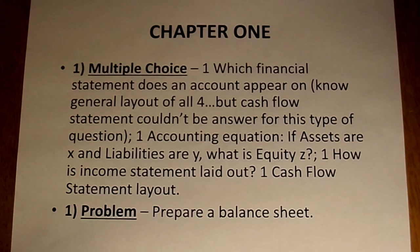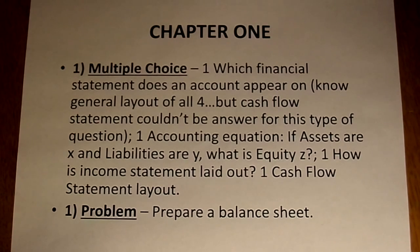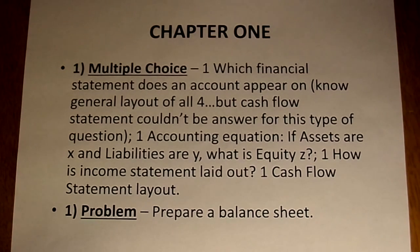One of the numbers will be an X for you to solve. One question is: how is the income statement laid out? The answer is revenue minus expense equals net income. Then, how is the cash flow statement laid out? The basic situation is cash flows from operating activities plus cash flows from financing activities plus cash flows from investing activities: operating, investing, and financing.